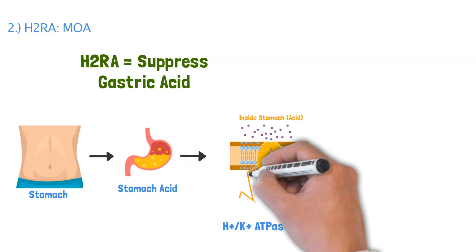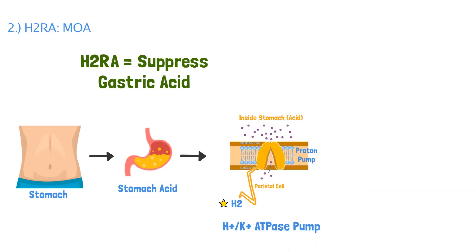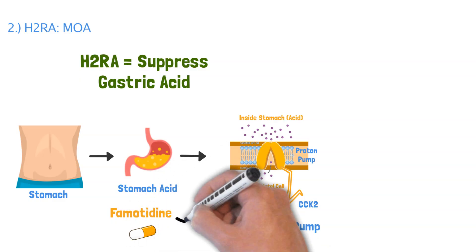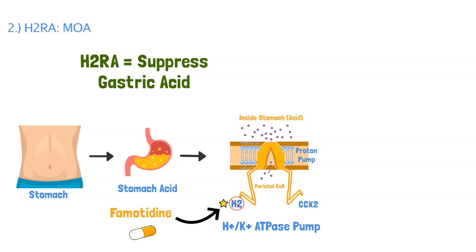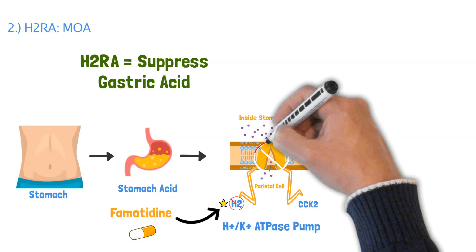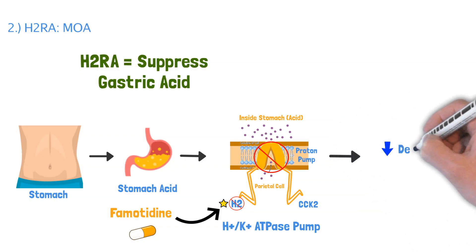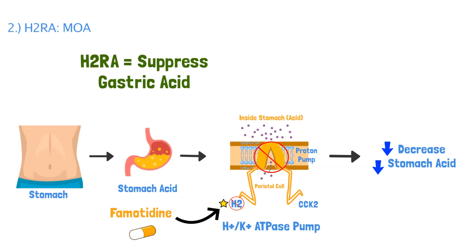Attached to the parietal cell, there are two pathways: the H2 pathway, which promotes the pump, and a second pathway called CCK2. If you take a drug like famotidine, it blocks the H2 receptor — blocking the pump from producing more acid. But since the CCK2 pathway remains open, the body can still drive the pump at times. That's why H2RAs are moderate: they block one side but not the other.